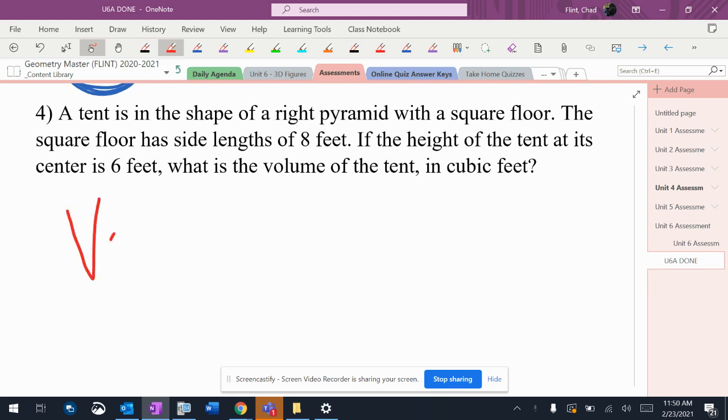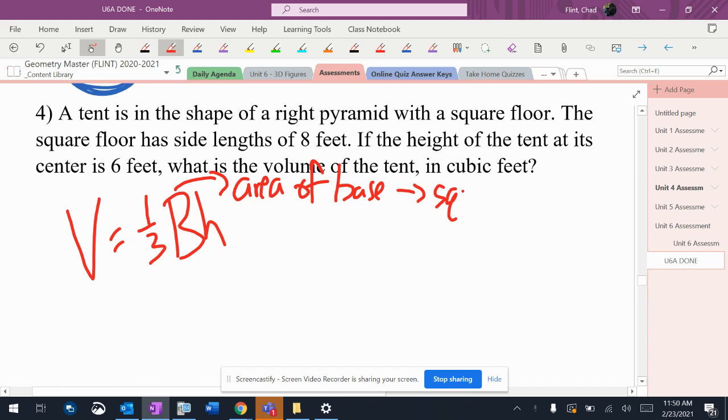But it's just a basic problem. Volume equals one-third capital B times H. Remember, capital B means area of the base. What's the base? It's a square. How do I find the area of a square?